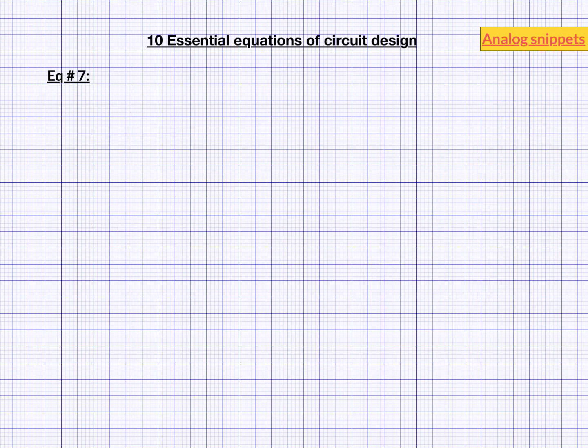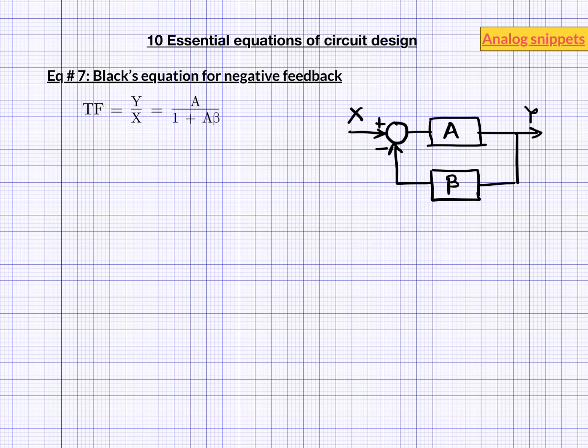Good understanding of feedback is crucial in circuit design. And that is why Black's equation for negative feedback is equation number 7 in my list. Transfer function of a negative feedback system is given by a over 1 plus a beta. Where a is the forward gain and beta is feedback factor. The product a beta is also known as loop gain. In most cases a is much larger than 1 while beta is less than 1. So this equation can further be approximated by 1 over beta.